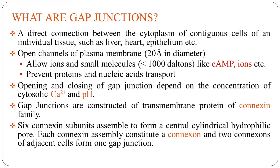We all know that direct interaction between cells, as well as between cells and extracellular matrices, are critical for development and functioning of multicellular organisms. Some cell-to-cell interactions are transient, like in the case of cells of the immune system. However, in other cases, there are many types of stable cell-to-cell junctions that play a key role in communication as well as organization of cells in tissues.